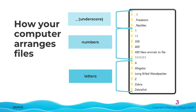Your computer arranges your files and folders in this order. Any name with an underscore is at the top of the list. Next is any name with a number in front. And then come the file names starting with letters. Within those sections, the computer stores your files and folders in alphanumeric order.